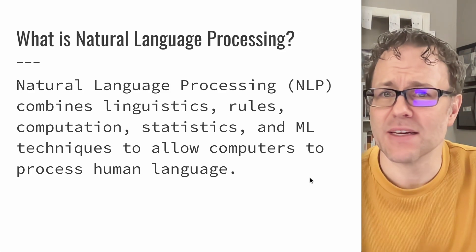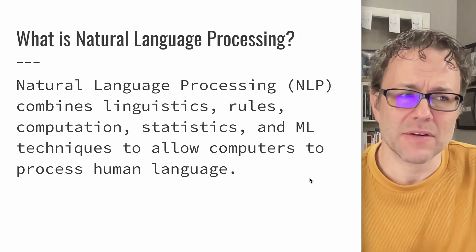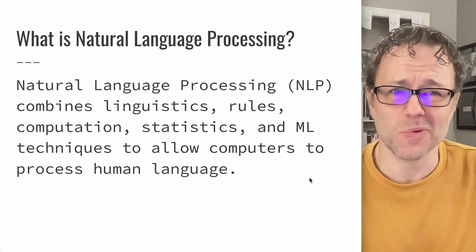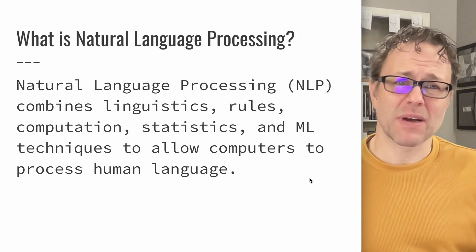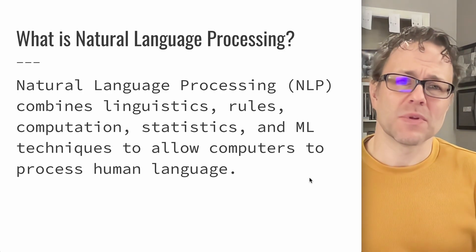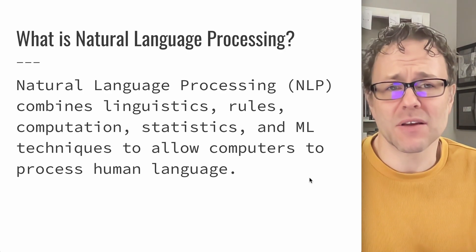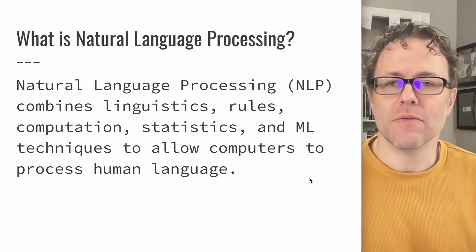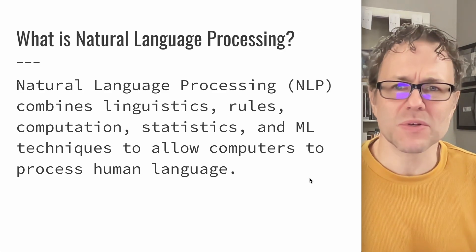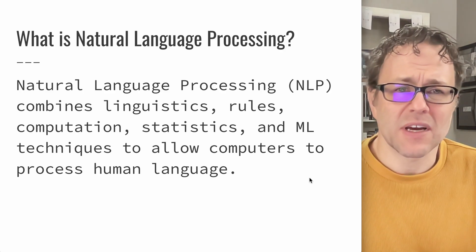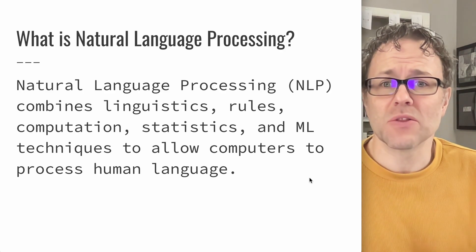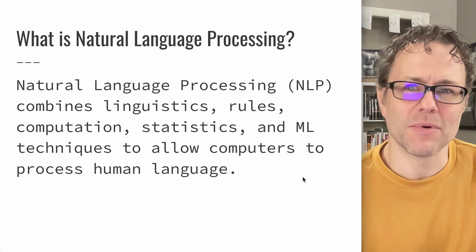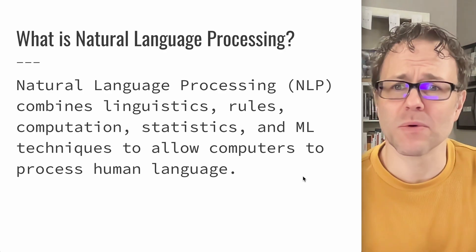Natural language processing combines several different approaches. We have linguistics — language has rules. In English, you expect to have a subject and a predicate, with proper nouns, direct objects, and other components that follow certain rules most of the time. You also have computational techniques, statistical techniques, and machine learning techniques that allow computers to process — you probably don't want to say 'understand' — but to extract some meaning from human language.